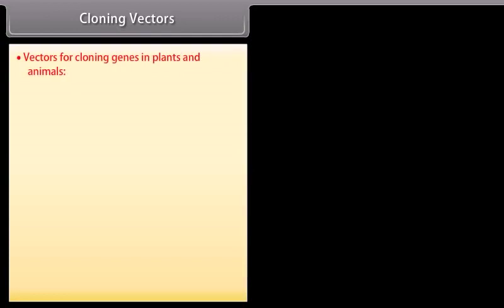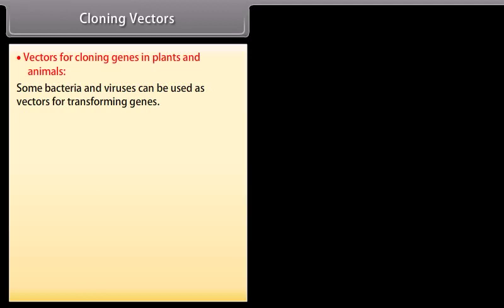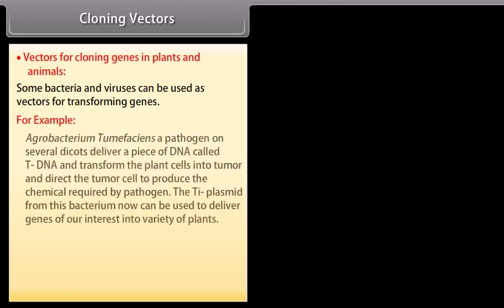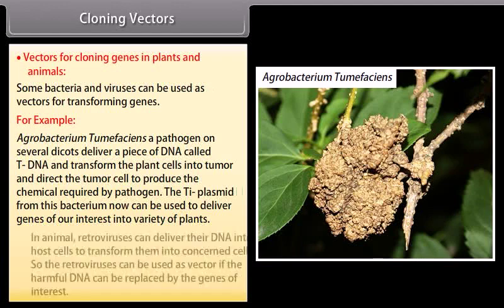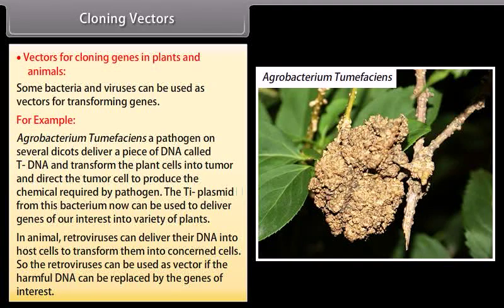Vectors for cloning genes in plants and animals. Some bacteria and viruses can be used as vectors for transforming genes. For example, Agrobacterium tumefaciens, a pathogen on several dicots, delivers a piece of DNA called T-DNA and transforms plant cells into tumor cells, directing them to produce chemicals required by the pathogen. The Ti-plasmid from this bacterium can now be used to deliver genes of interest into a variety of plants. In animals, retroviruses can deliver their DNA into host cells to transform them. Retroviruses can be used as vectors if the harmful DNA is replaced by the genes of interest.